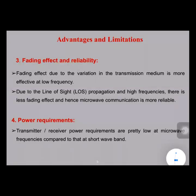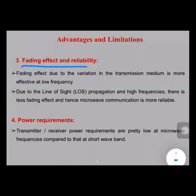Whenever talking about line-of-sight propagation at higher frequencies, the fading effect in microwave communication is manageable. For example, if an antenna is transmitting a microwave signal and the fading level is high in a certain direction, the position or angle of the antenna can be changed to reduce the fading effect. This is the third advantage: the fading effect is less and it is reliable — we can eliminate it.